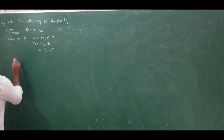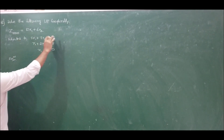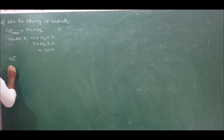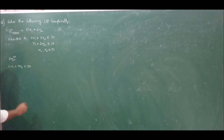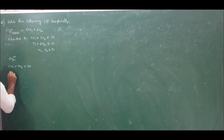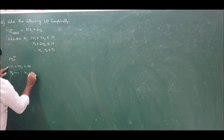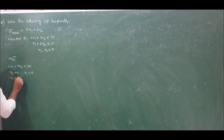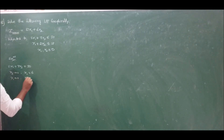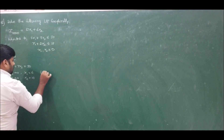For the solution of problem 12, first convert the two constraints into equations. Taking the first constraint: 5x1 plus 3x2 equals 30. Setting x2 to 0, we get x1 equals 6. Setting x1 to 0, we get x2 equals 10. Therefore, the coordinates for the first constraint are (6, 10).